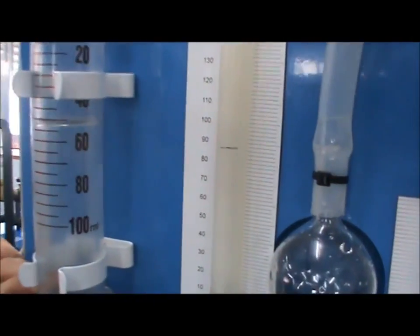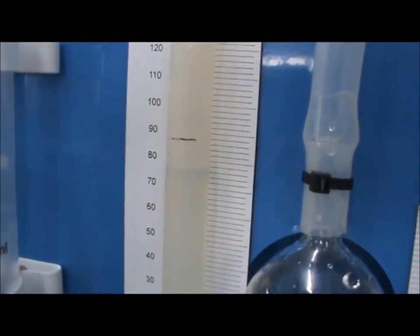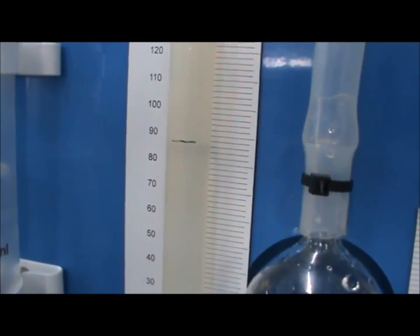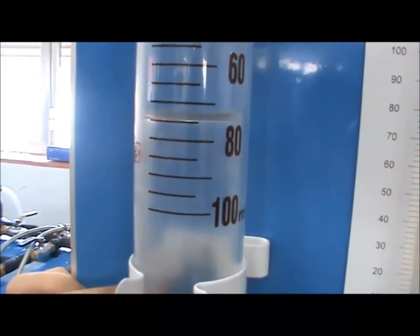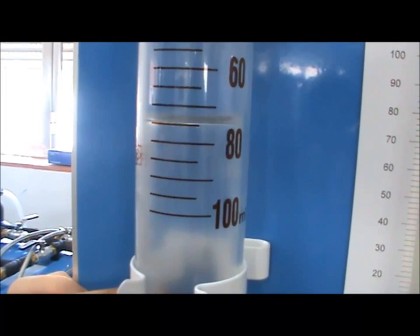Pull the plunger down to bring the solution to the marked level, and carefully measure the value shown on the syringe. In this experiment, the KOH solution absorbed 25 mL of CO2.